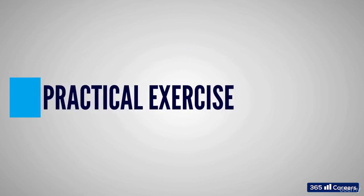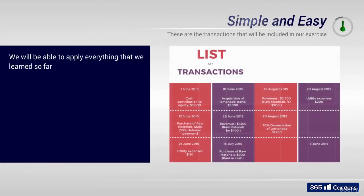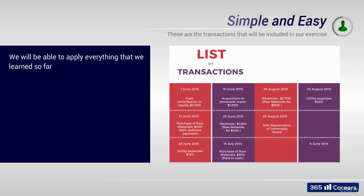We've done the groundwork and acquired all the necessary tools to solve a simple but complete accounting exercise. Our goal in the next lessons will be to create a balance sheet and an income statement for a very small business. The exercise is simple and easy, but very useful — we will go through a complete series of business operations and translate them into financial statements, practicing the concepts learned so far.